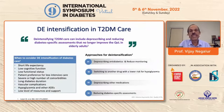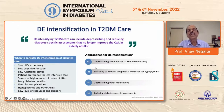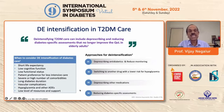De-intensification of treatment in diabetes is an important aspect in the elderly population. This includes decreasing prescription of drugs, which improves quality of life. Reasons include short life expectancy, low cognition, low functional status, patient preference for less intensive care, long duration of diabetes, vascular complications, and risk of hypoglycemia. We need to bring about de-prescribing, reduce monitoring to make life comfortable, switch to drugs which do not produce hypoglycemia, de-prescribe other medications such as statins, and reduce diabetic-specific assessments.